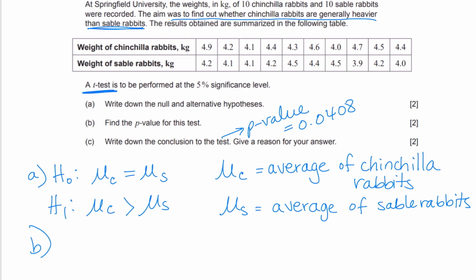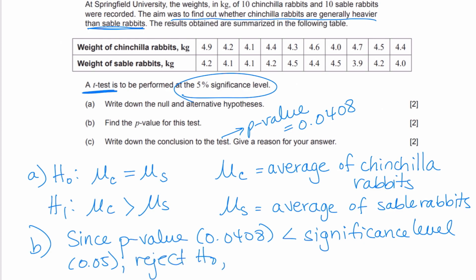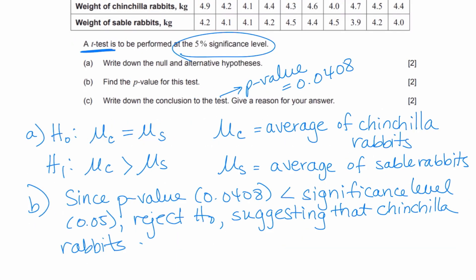We're going to say that since our p-value of 0.0408 is less than the significance level, which they told us is 5%, basically that means that we will reject the null hypothesis, suggesting that chinchilla rabbits are heavier than sable rabbits. And that's going to be your final answer.